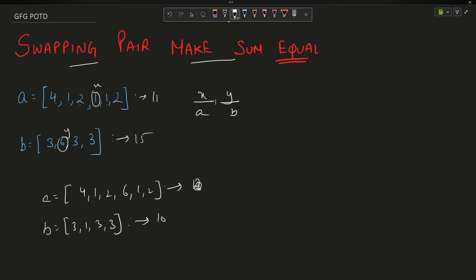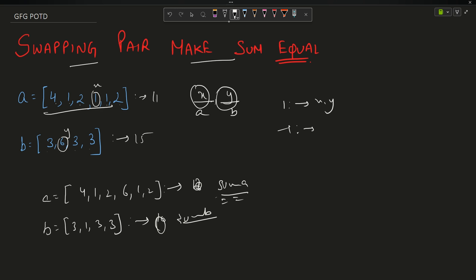The condition is: x and y should be selected such that the new sum of A and new sum of B are equal, and we return 1 if we find such a pair, or -1 if not possible. Also, even if sum A and sum B are initially equal, we still need to find exactly one pair to swap such that the sums remain equal.